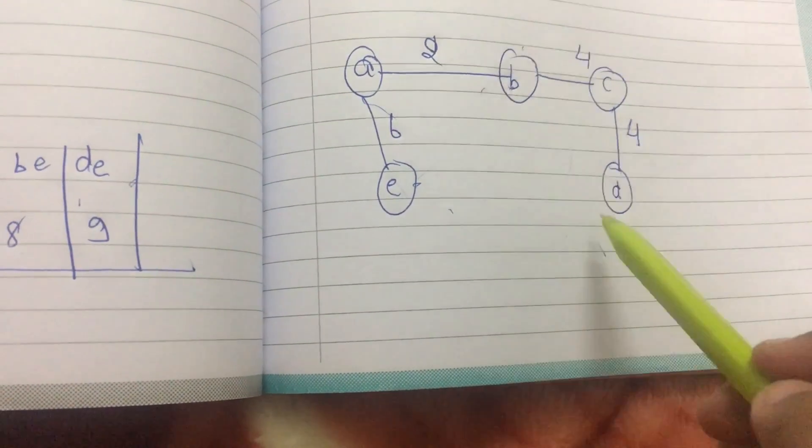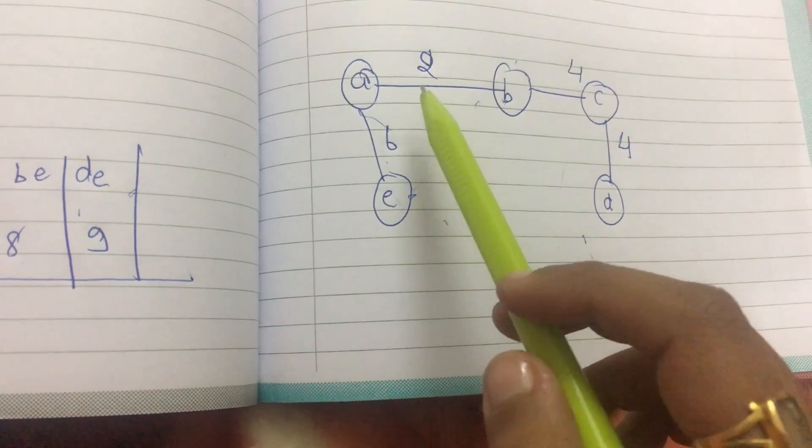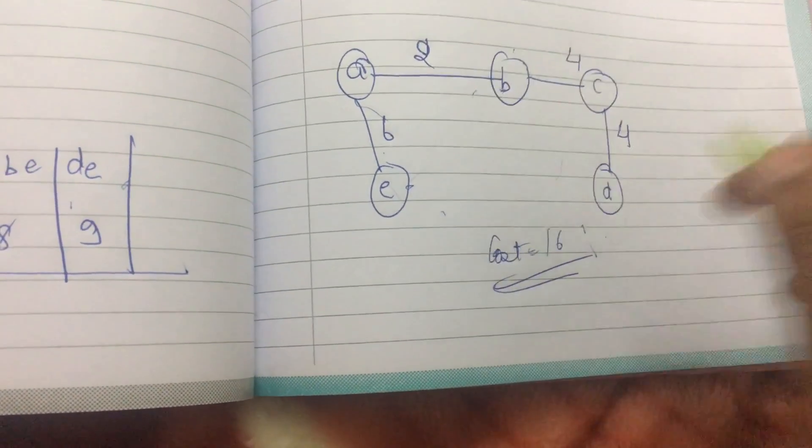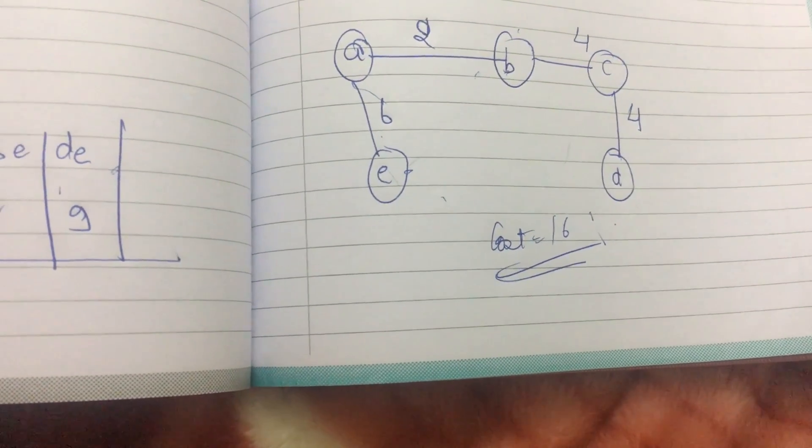So this is my minimum cost spanning tree with the minimum cost of 6 plus 2 is 8, 8 plus 8 is 16. The cost is 16.